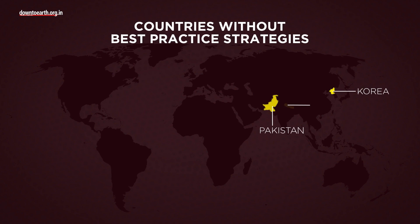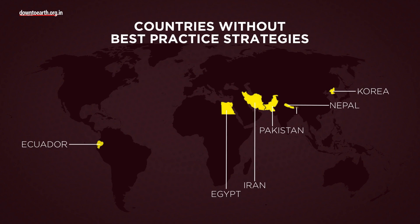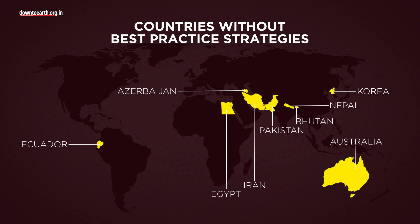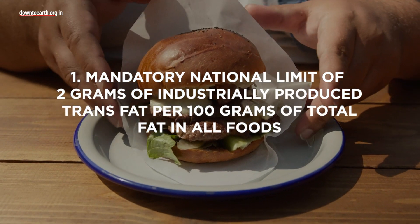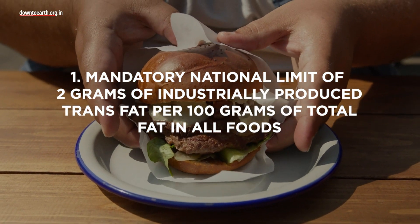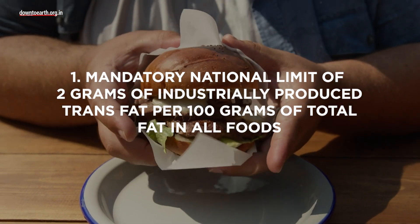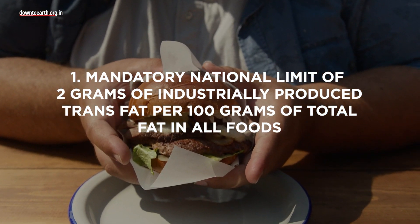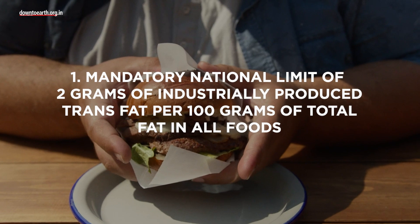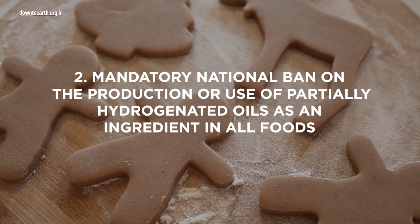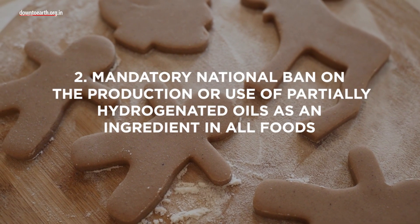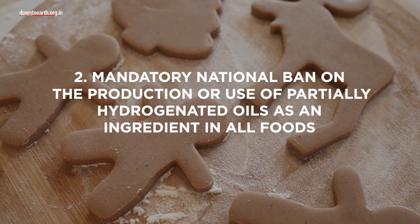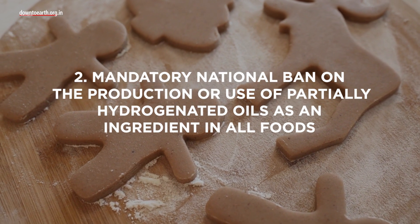Nine of the 16 nations with the highest estimated percentage of coronary heart disease fatalities attributed to trans fat consumption do not have a best practices strategy. This includes a mandatory national limit of 2 grams of industrially produced trans fat per 100 grams of total fat in all foods, and a mandatory national ban on the production or use of partially hydrogenated oils as an ingredient in all foods.